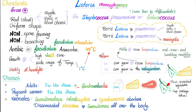When Listeria causes gastroenteritis and flu-like illness, it's usually from ingestion of raw, unpasteurized milk, raw unpasteurized soft cheese, undercooked meat — because Listeria can still survive — and raw, unwashed vegetables, especially cabbage and lettuce. If you follow food outbreaks, the most common causes are E. coli, Salmonella, and Listeria. As for hemolysis on the agar, Listeria is weakly beta-hemolytic.